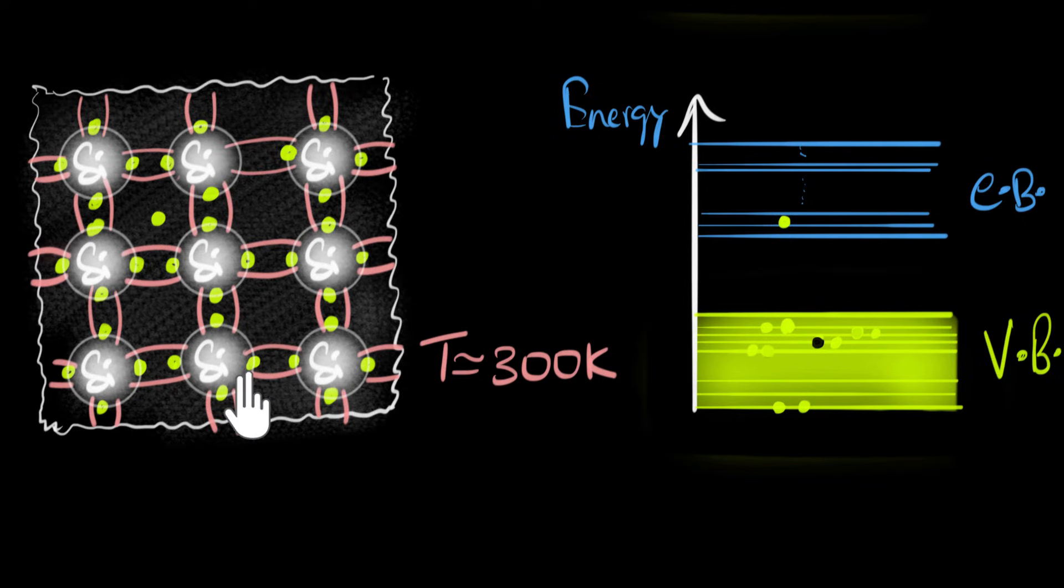And maybe another electron, maybe this electron now, can take up this site. Maybe it's this electron. That's the one that's going over there. All I'm showing is some electrons jumping from one place to another, due to thermal randomness. And notice, as a result, can you see that this empty space, this vacant space, sort of feels like it's moving around?